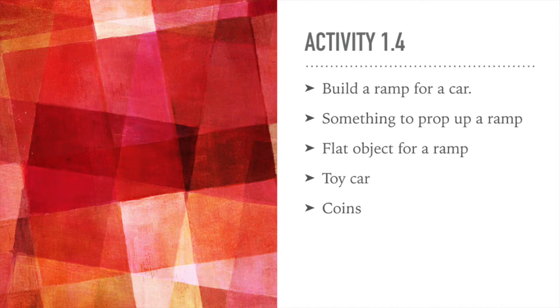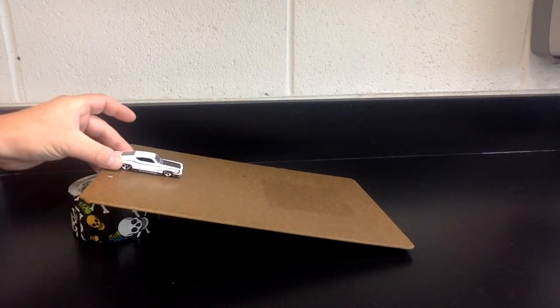For activity 1.4, you need to build a ramp out of some smooth object and a stand. And you'll need some kind of car to roll down the ramp, and maybe some coins to weight down the car.